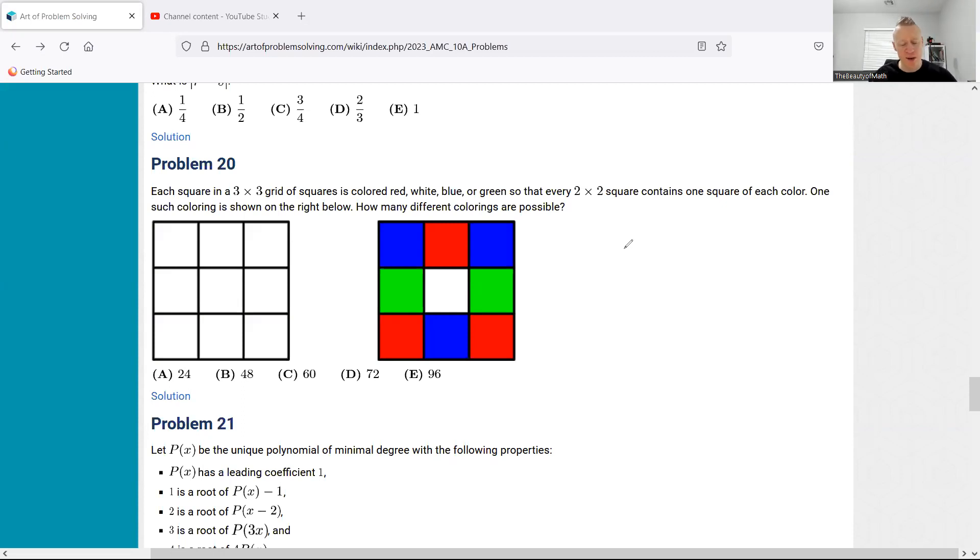Each square in a three by three grid of squares is colored red, white, blue, or green so that every two by two square, meaning if I was to come over here, this is the two by two square that they're talking about, but not just that one, also this one. All such two by two squares that you could make contains one little square of each color. So if you look, for example, in the upper left right here, you have blue, green, red, and white are all there.